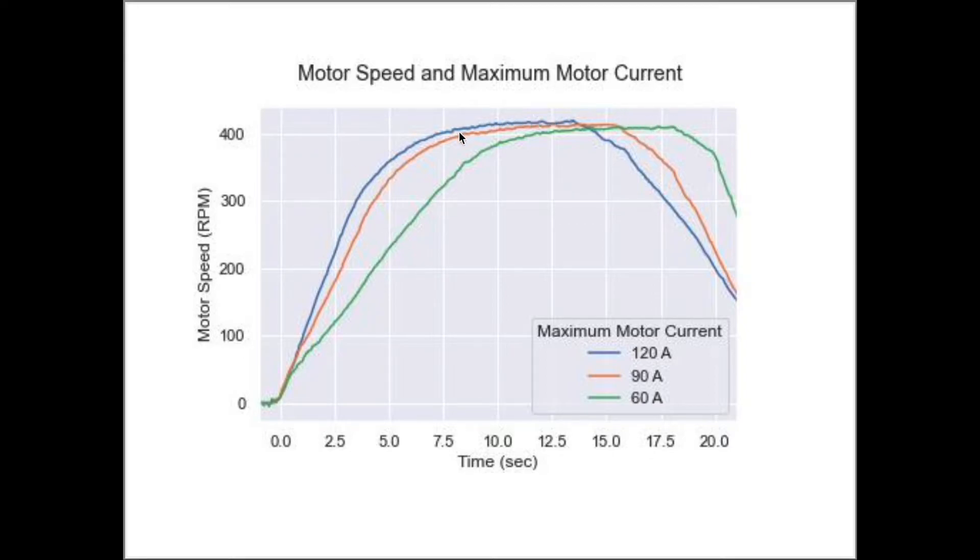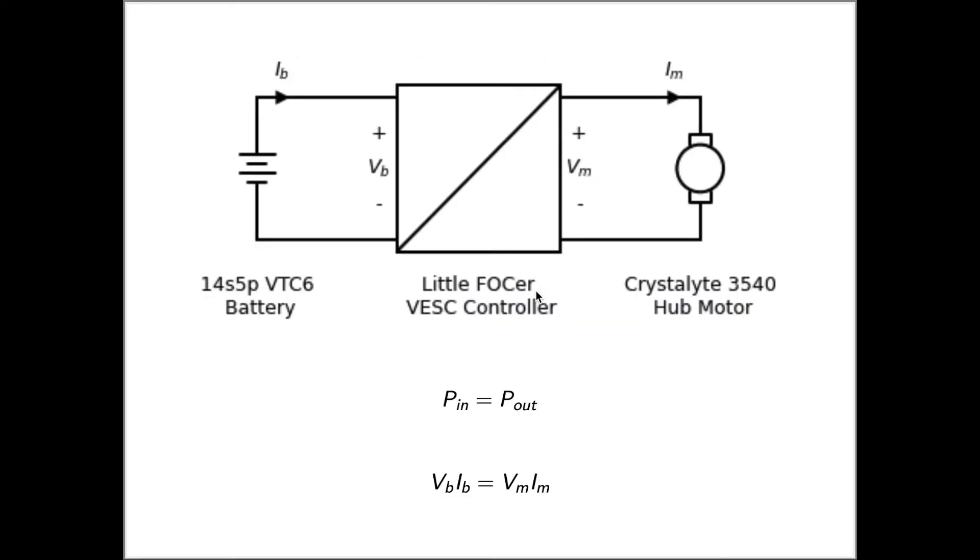Note that the top speed does not show any significant variation. Now let's connect the motor speed behavior to the motor and battery currents. We can use our simple controller model to predict what the currents will look like. At full throttle, the controller will try to maintain the maximum current limit value.